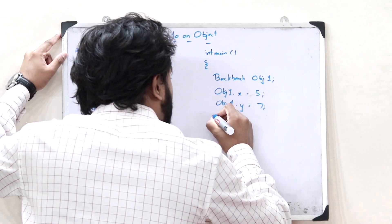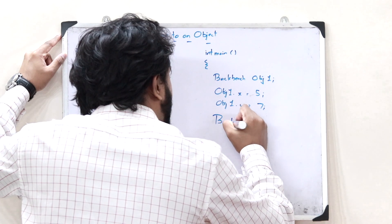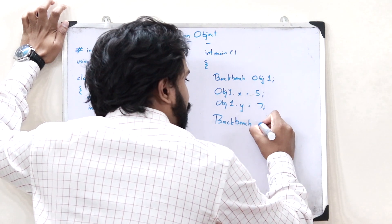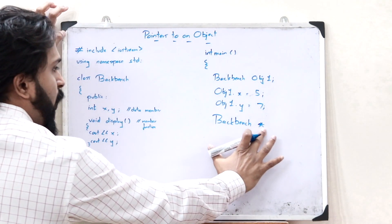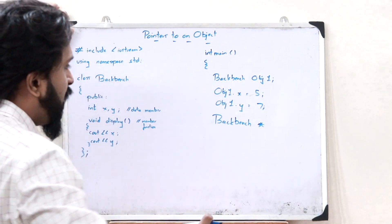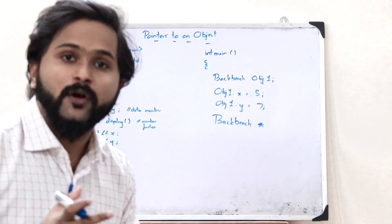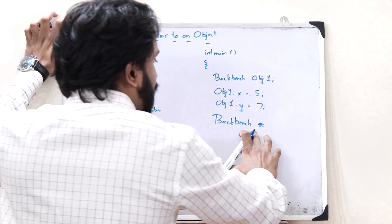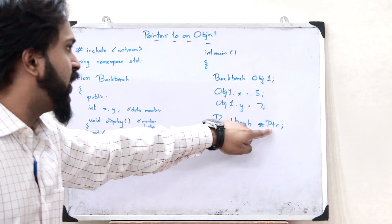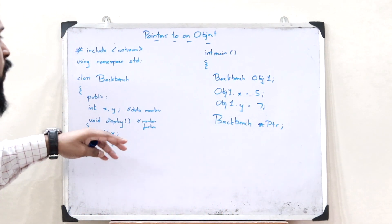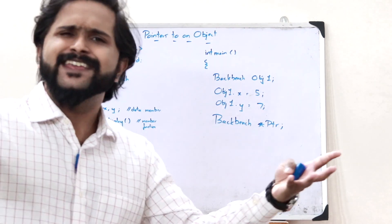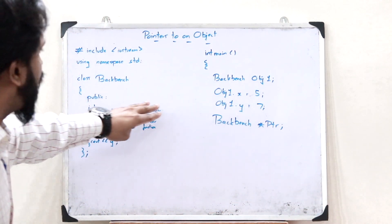Next, what we do is we create a pointer of this particular class. A pointer is created using the star operator. If we include a star before the name of a particular object, that particular object will be declared as a pointer. So let me declare this as star PTR. This particular PTR is now declared as a pointer, and it can store the address of any object from this particular class Backbench.